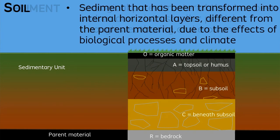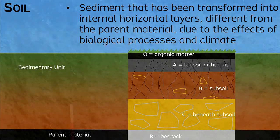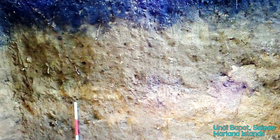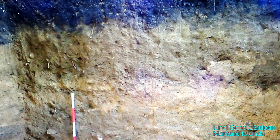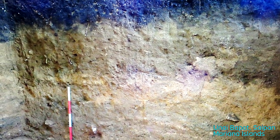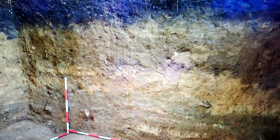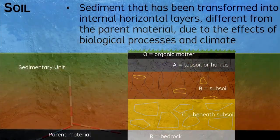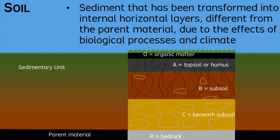You can think of soils as the results of various transformations of sediments through time. Typically, a sedimentary unit will be transformed into a set of internal horizons of a soil. Each horizon from top to bottom shows different color, texture, organic content, and other factors of how the sediment has been transformed.